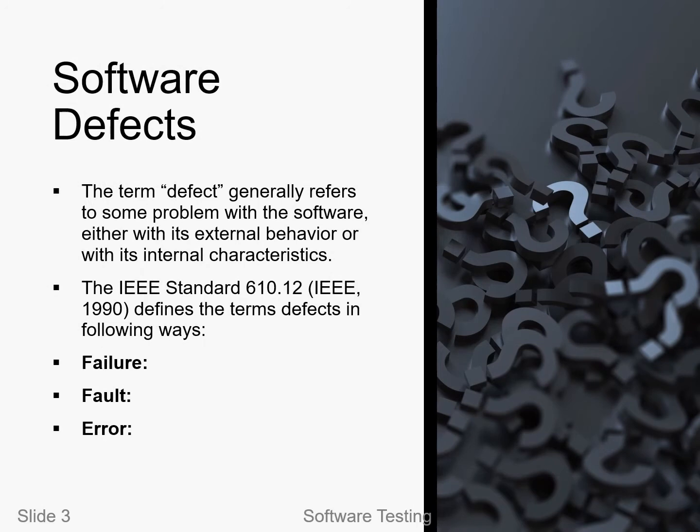Software defects can be referred to as a problem in terms of external behavior or internal characteristics. According to IEEE standard 610.12, defects have been defined in three ways: failure, fault, or error.